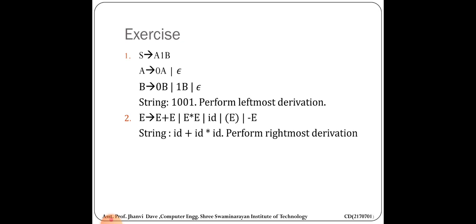Here is an exercise. Grammar: S → A1B, A → 0A | ε, B → 0B | 1B | ε. Output string: 1001. To perform leftmost derivation, start from starting symbol S. Replace S with A1B. Then replace the leftmost A: since we need 1 as the first symbol, and replacing A with 0A would give 0 first — that's wrong. So replace S with A1B, then replace B step by step: B → 0B, then again B → 0B giving A100B, then B → 1B giving A1001B.